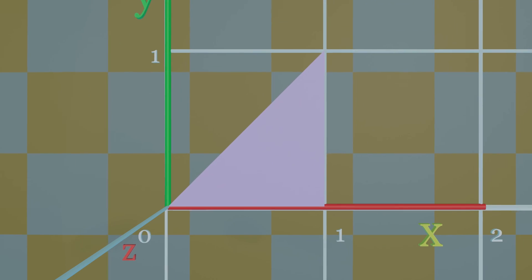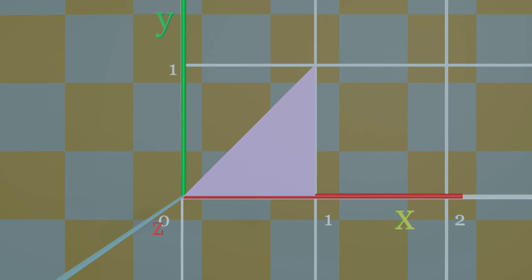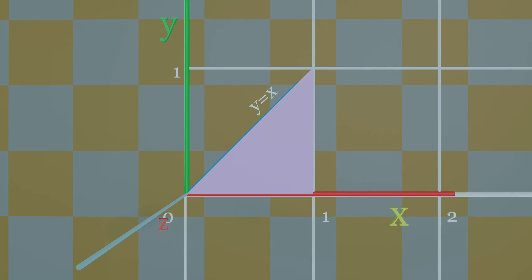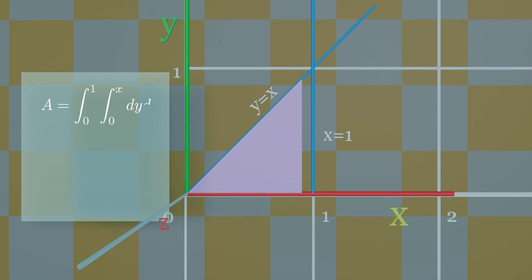The triangle in the xy-plane, bounded by the x-axis and the lines y equals x and x equals 1. Now if you double-integrate this general region, you get the area of this triangle.